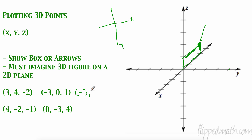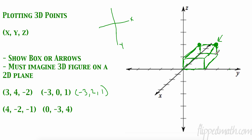Let's do (-3, 2, 1). We go negative three back on x, then two over on y, drawing it as a parallelogram. Then up one on z, connecting everything to form the box. Which of the eight corners is negative three back, two over, and one up? Right here. This also leads into the next method — draw an arrow back three, another arrow over two, then up one.